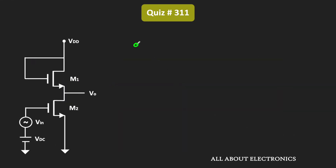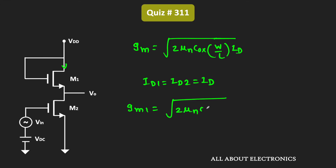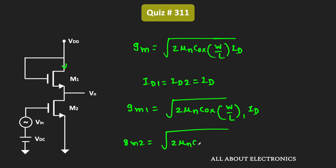If you are aware, the transconductance Gm can also be expressed as the square root of 2 times µn times Cox times W by L times Id, where Id is the drain current. Since both transistors are connected in series, the same drain current flows through both transistors — that is, Id1 equals Id2 equals Id. So Gm1 can be written as the square root of 2 times µn times Cox times (W/L)₁ times Id.